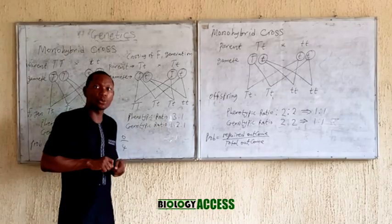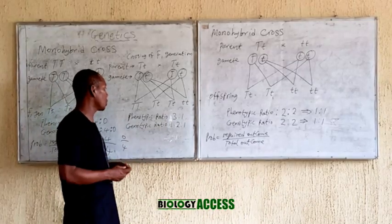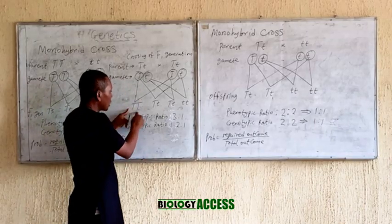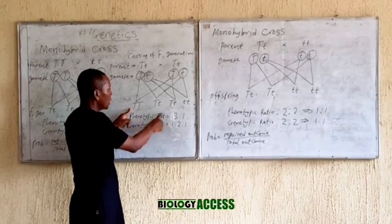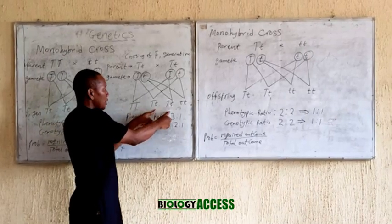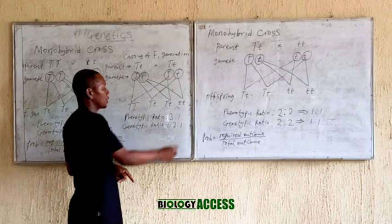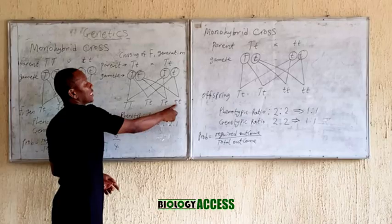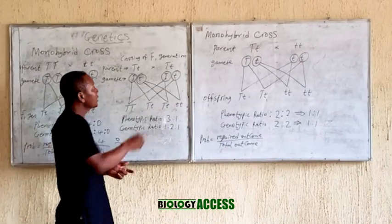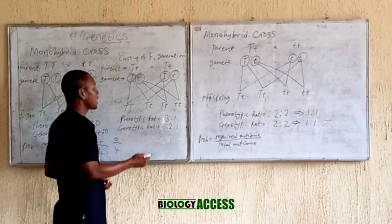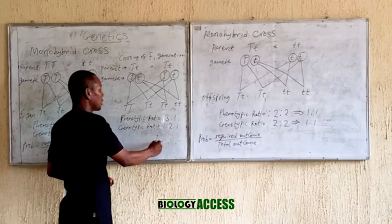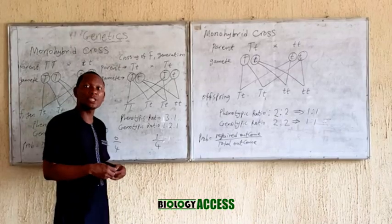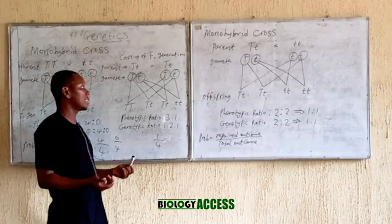For the genotypic ratio: we have one distinct genotype here, that's 1. These two in the middle share a different genotype, that's 2. And the last one is yet another genotype, that's 1. So the genotypic ratio is 1:2:1. For example, what is the probability of getting a genotype of small t small t? The favourable outcome is 1 out of a total of 4. You can also convert your answer to a percentage or decimal.